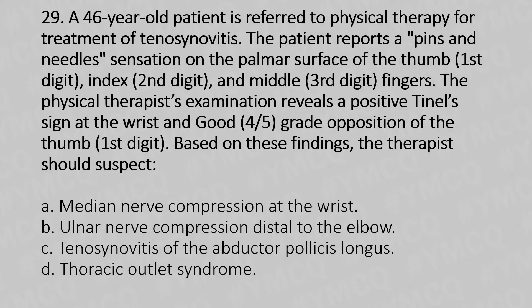Based on these findings, the therapist should suspect: Option A: median nerve compression at the wrist. Option B: ulnar nerve compression distal to the elbow. Option C: tenosynovitis of the abductor pollicis longus. Option D: thoracic outlet syndrome.